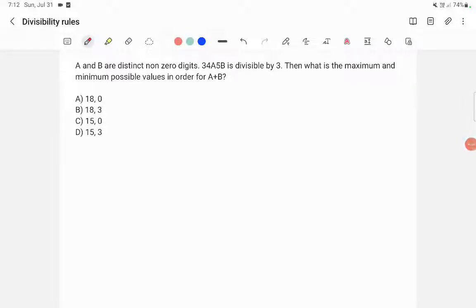Hey guys, this is an example for divisibility rules. A and B are distinctive non-zero digits. The number 3, 4, A, 5, B is divisible by 3. Then what is the maximum and minimum possible values for A plus B?